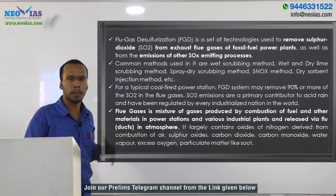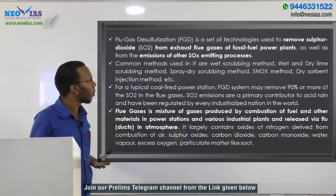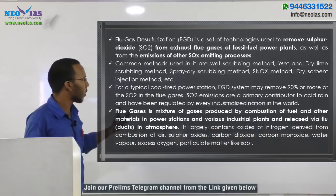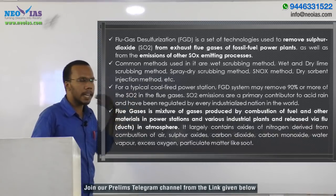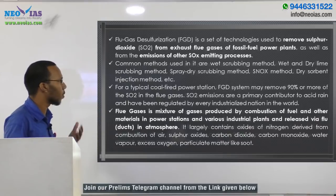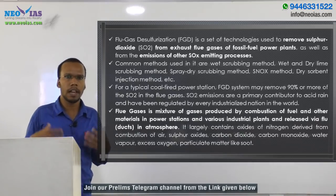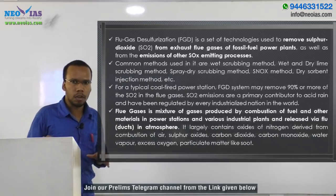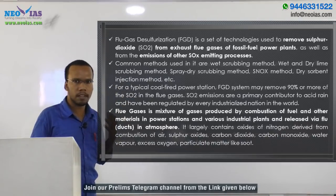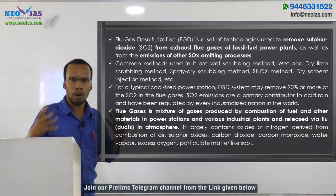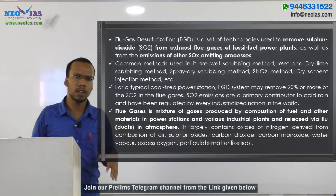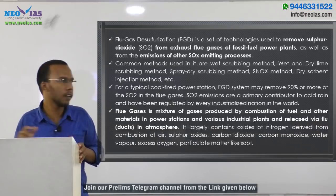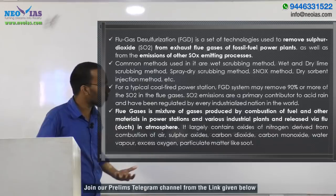For a typical coal-fired power station, the flue gas desulfurization system may remove around 90% or more of the SO2 in the flue gases. So more than 90% of sulfur dioxide can be removed using flue gas desulfurization. Sulfur dioxide emissions are a primary contributor to acid rain and have been regulated by every industrialized nation in the world.